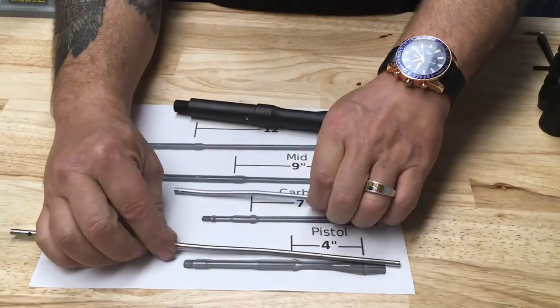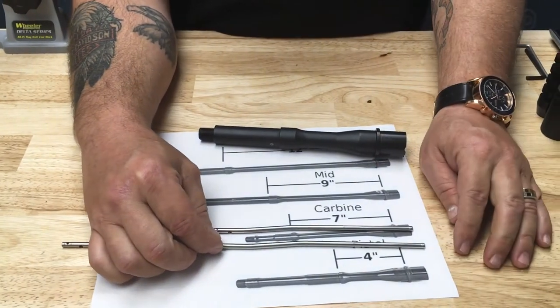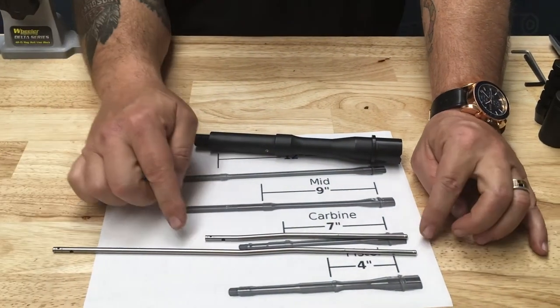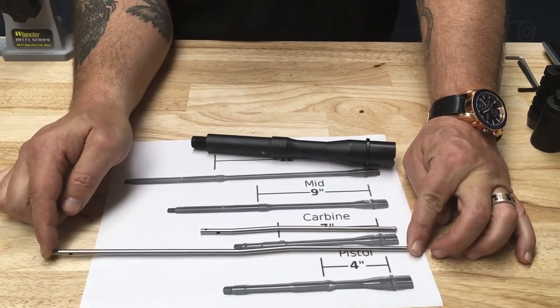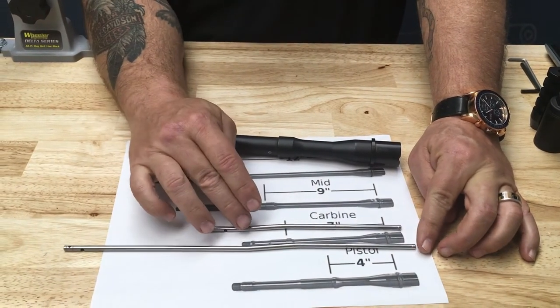So these are gas tubes, right? And you'll notice that this is significantly longer than four inches, and this is significantly longer than nine inches—this being a mid-length and this being a pistol.